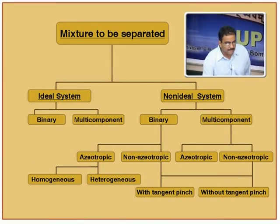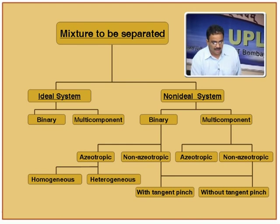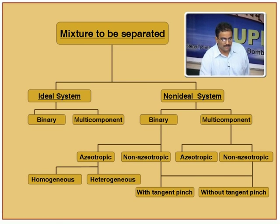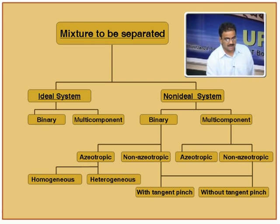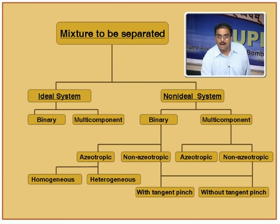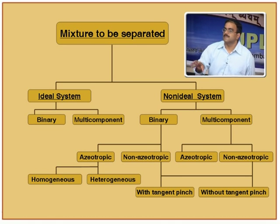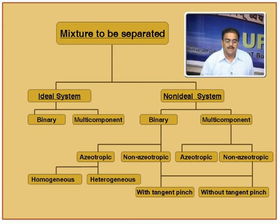We want to relax this and extend the McCabe-Thiele method to multi-component systems. Let us look at what kinds of systems we encounter in distillation design. Mixtures to be separated can be ideal or non-ideal, and in both cases we can have binary or multi-component systems. In multi-component systems with ideality, we need the proper vapor-liquid equilibrium equation. For ideal binary systems, the VLE is y = αx / (1 + (α−1)x), where α is the relative volatility, normally the ratio of vapor pressures.